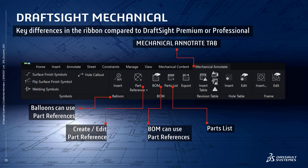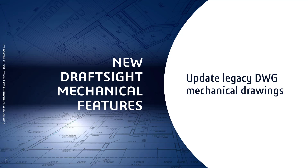The Mechanical Content tab introduces additional features for mechanical layers and construction lines. The Mechanical Annotate tab introduces both new and enhanced features. Key new features include the ability to create and modify part references. Unlike in other DraftSight versions, the new balloon feature is able to use these part references, as is the BOM feature. We can also see a new command for parts list. Note that the ribbon is currently shown in dark mode, introduced in DraftSight 2022.